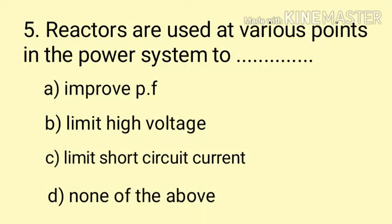Question number 5. Reactors are used at various points in the power system to dash. Option A: improve power factor. Option B: limit high voltage. Option C: limit short circuit current. Option D: none of the above. Reactor ko hum power system mein use karte hain — reactor is nothing but an inductor. Inductor ka property kya hai? Yeh short circuit current ko, yeh change in current ko oppose karta hai. Short circuit current is nothing but a change in current. That's why reactors are used to limit short circuit current. Here the correct answer is Option C.